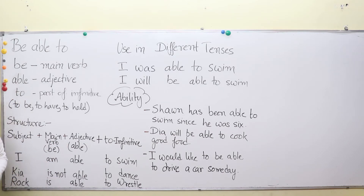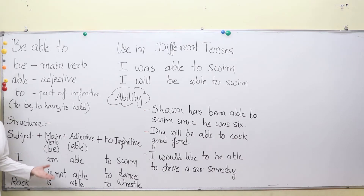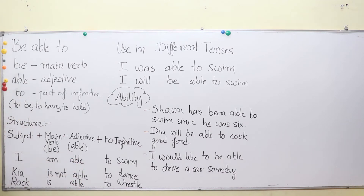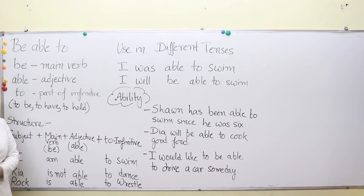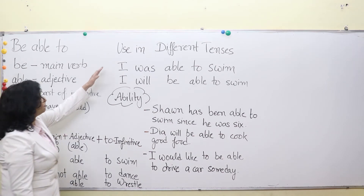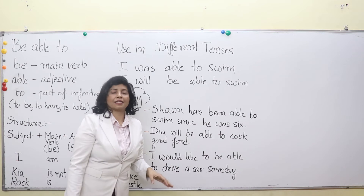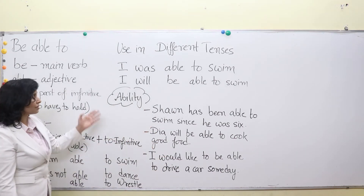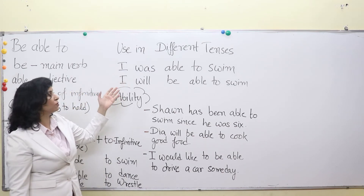Another example: 'Rock is able to wrestle.' Rock — Dwayne Johnson — is a famous wrestler who has been in WWE, so of course he can wrestle very nicely. These are the type of sentences you can use, and you can practice them with your friends, family, and siblings. Now, 'be able to' can also be used in different tenses — past tense and future tense as well.